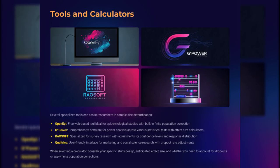You don't need to be a statistician to calculate sample size, but you do need the right tools. Here are four gold-standard options: 1. OpenEpi — free, web-based, great for epidemiological studies, includes FPC. 2. G-Power — the most comprehensive power analysis tool, ideal for t-tests, ANOVAs, and regressions. 3. RayoSoft — tailored for surveys, lets you input confidence level and response distribution. 4. Qualtrics — perfect for social sciences with built-in dropout adjustment and a user-friendly interface. Pick based on study design, effect size, and whether you're expecting dropouts or small population constraints. Remember: no calculator can fix bad assumptions — garbage in, garbage out.